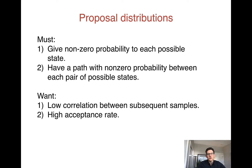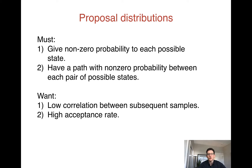I want to talk about some practical considerations related to Gibbs sampling in MCMC. Specifically, for the Metropolis-Hastings Algorithm, we need to choose a proposal distribution. So how do we choose a good proposal distribution?